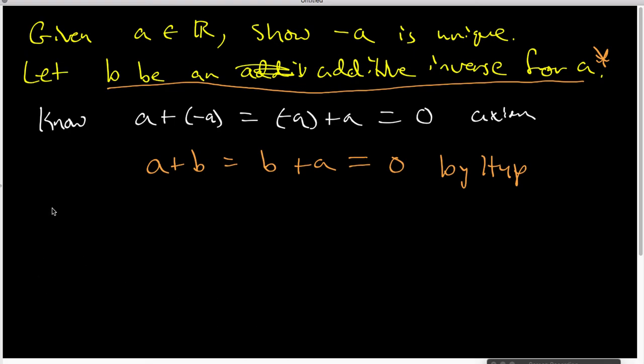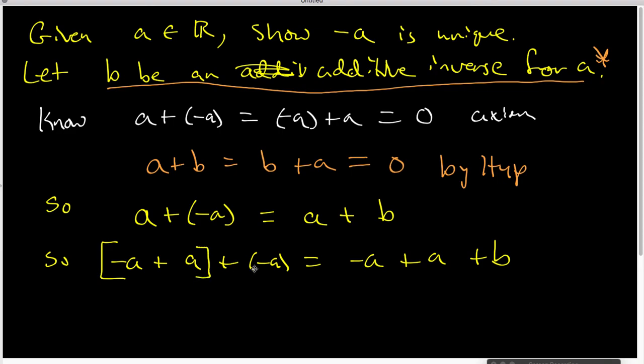So what do I know? I know that A+(-A) is the same thing as A+B. And I'm now going to add -A on the front side of both equations. So we have (-A)+A+(-A) is equal to (-A)+A+B. And again, we have the associative law, so we can put parentheses where we want them. And when we do, we have 0+(-A) is equal to 0+B, but that tells us -A and B are exactly the same element.